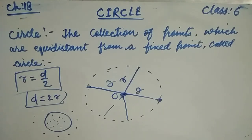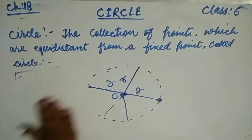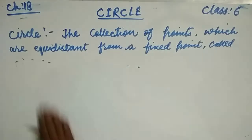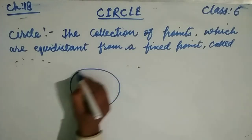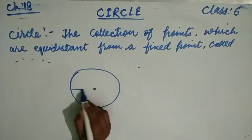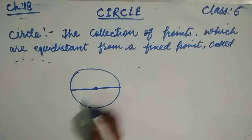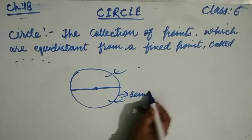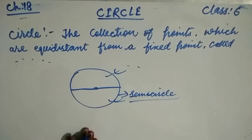One important thing: how can we divide the circle into two equal pieces? The great scientist Thales said if you want to divide the circle into two equal pieces, draw the diameter. The diameter of the circle divides the whole circle into two equal pieces, and each piece is called a semicircle.